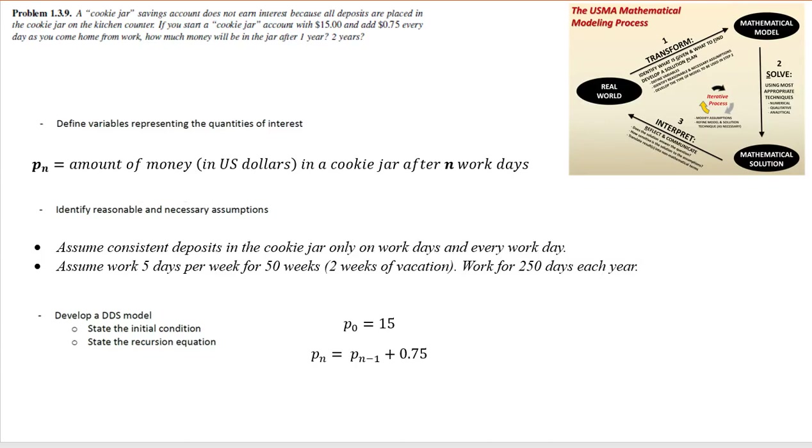We call the cookie jar problem and our model where we define p sub n to be the amount of money in dollars in a cookie jar after n work days. In our modeling process through the transform step, we identified some reasonable and necessary assumptions, which equate to working for 250 days each year. This was critical because we were trying to find how much money would be in the cookie jar after one year and after two years.